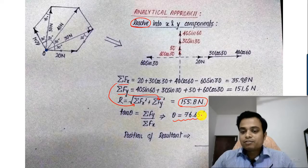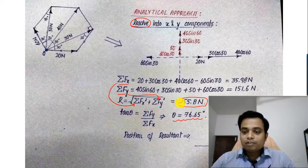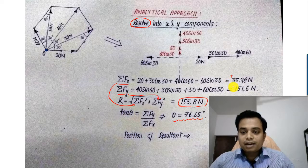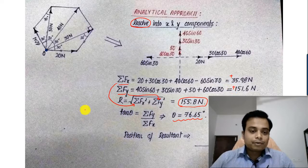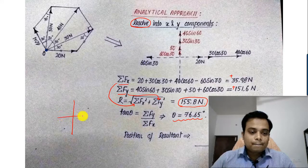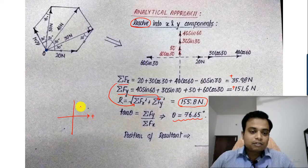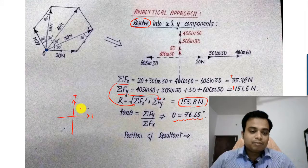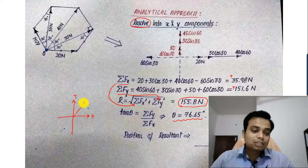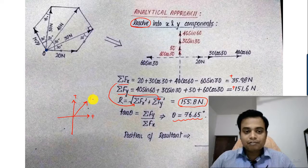Then finally the value of theta that you're going to get is 76.65. Now watch carefully, we've got both positive values of Fx and Fy. In that sense, if you were to draw a quadrant system, this is positive Fx, this is positive Fy, that means the resultant will be lying in the first quadrant making an angle of theta with the horizontal.